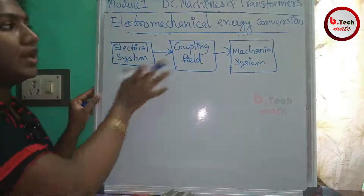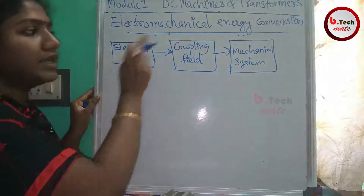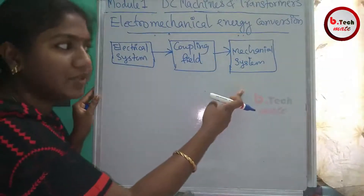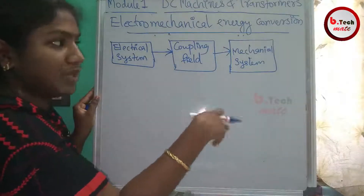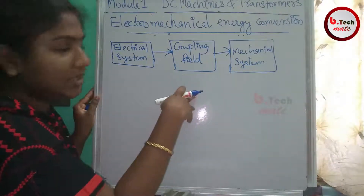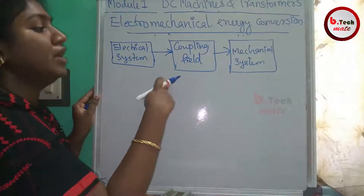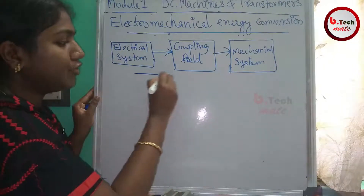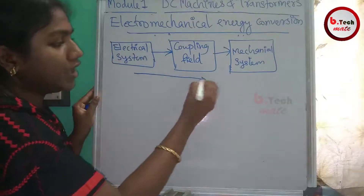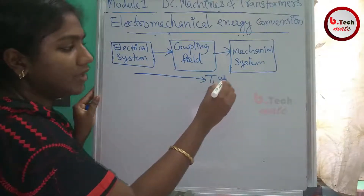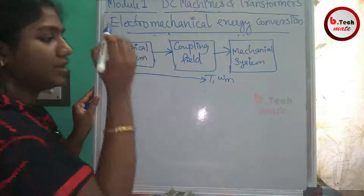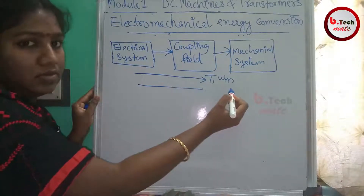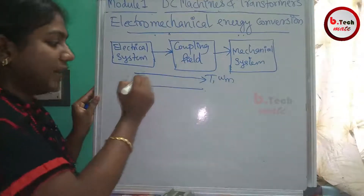In Electromechanical Energy Conversion, you can convert to electrical energy. This is a reversible process — left-to-right, that is Electrical-to-Mechanical conversion. When we convert it, the parameters are called Torque and Speed: T is Torque and Omega M is Speed.